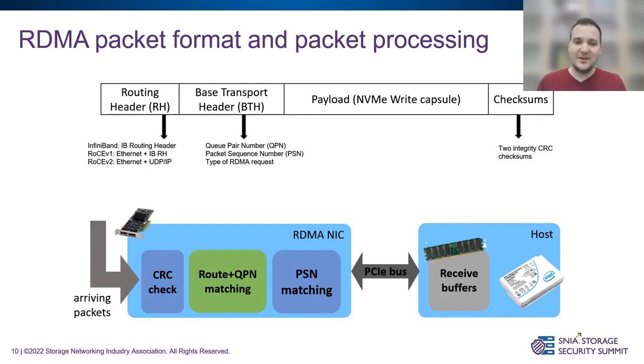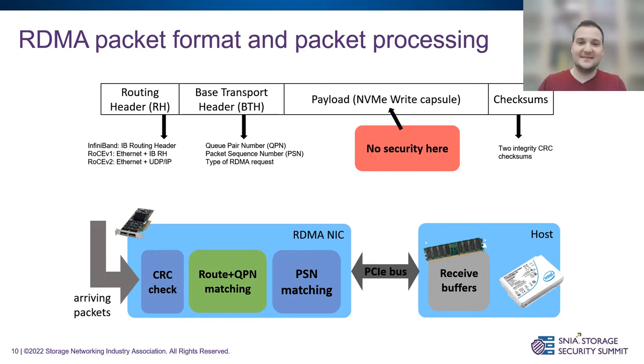The packet is processed by the device, which checks that the packet is correct, finds the local connection, and DMAs the content to the receive buffer. Interestingly, NVMe capsules have no security — there is no authentication of the sender. If a capsule reaches the receive buffers, it will be executed. These capsules just contain data and the ID of where it should be written, with no authentication of the sender whatsoever.